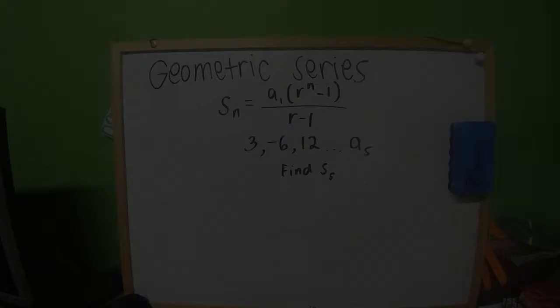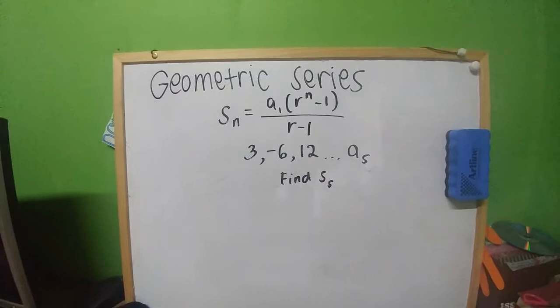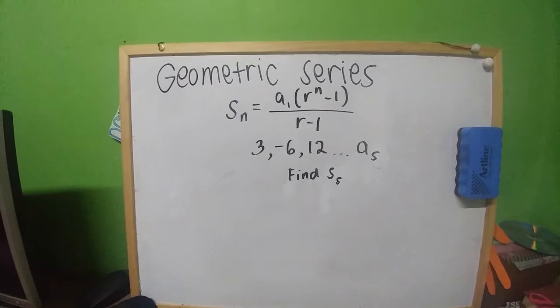The formula for the geometric series is S sub n equals a sub 1 times quantity r raised to n minus 1, all over r minus 1. In this series, let us find the sum of the 5 terms. First, let us substitute.